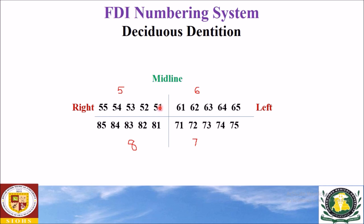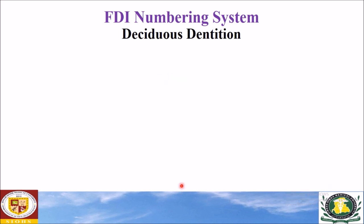The second digit basically represents the tooth number — one, two, three, four, five — and these numbers are the same for all quadrants, starting from the midline. Now we will do some exercises of the FDI notation system on the deciduous dentition.